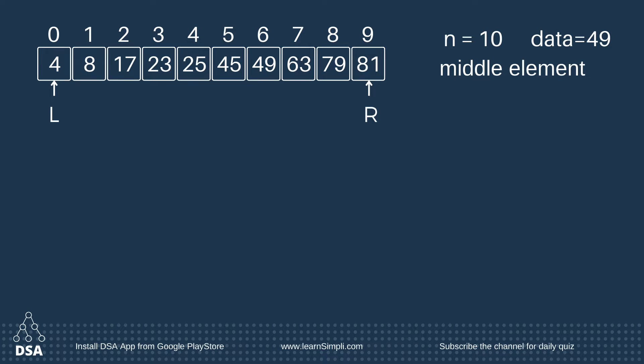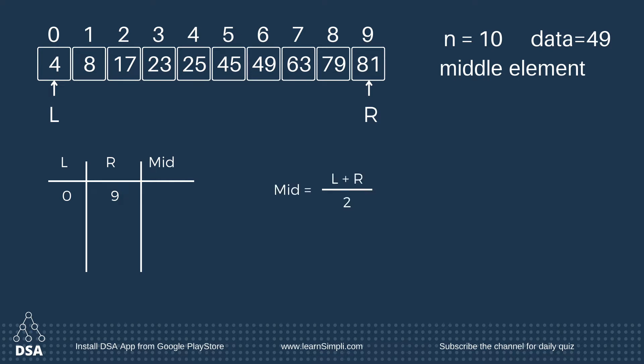Let's see how to find the middle value. The value of L is 0 and the value of R is 9. To find mid we calculate: left value plus right value divided by 2.